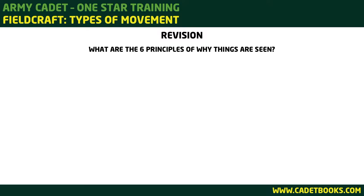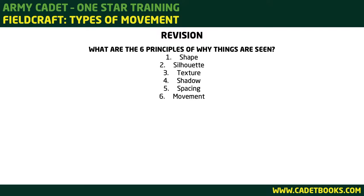Revision: What are the six principles of why things are seen? Shape, Silhouette, Texture, Shadow, Spacing, and Movement.